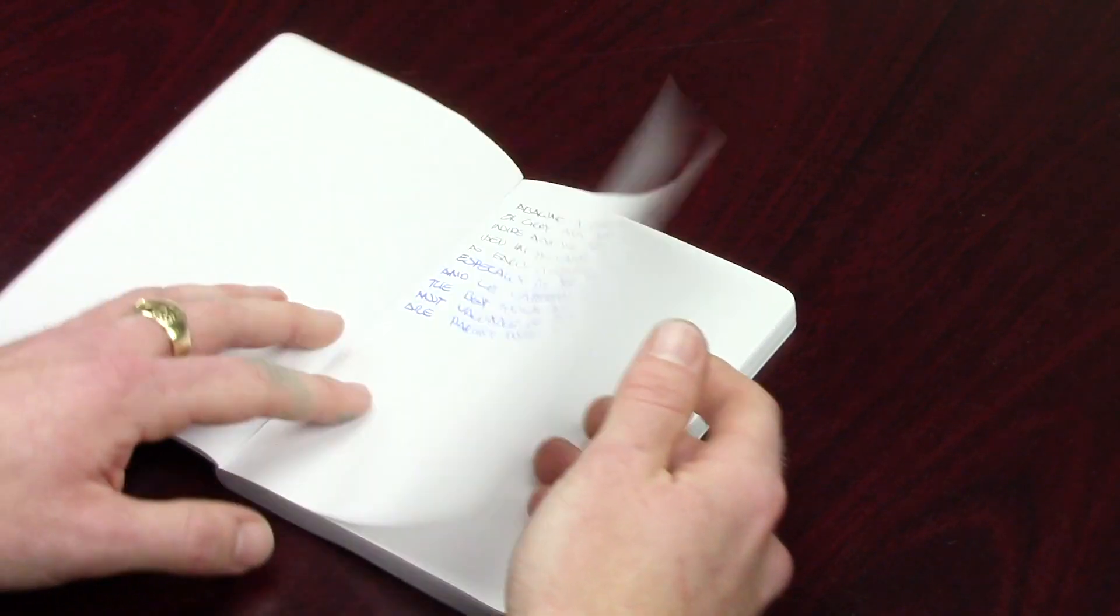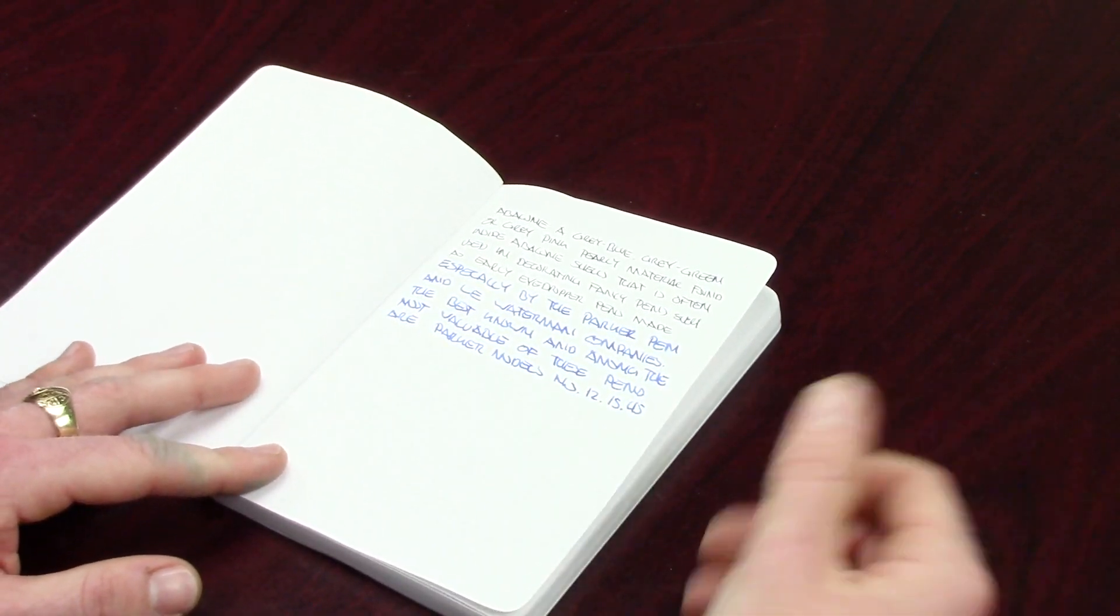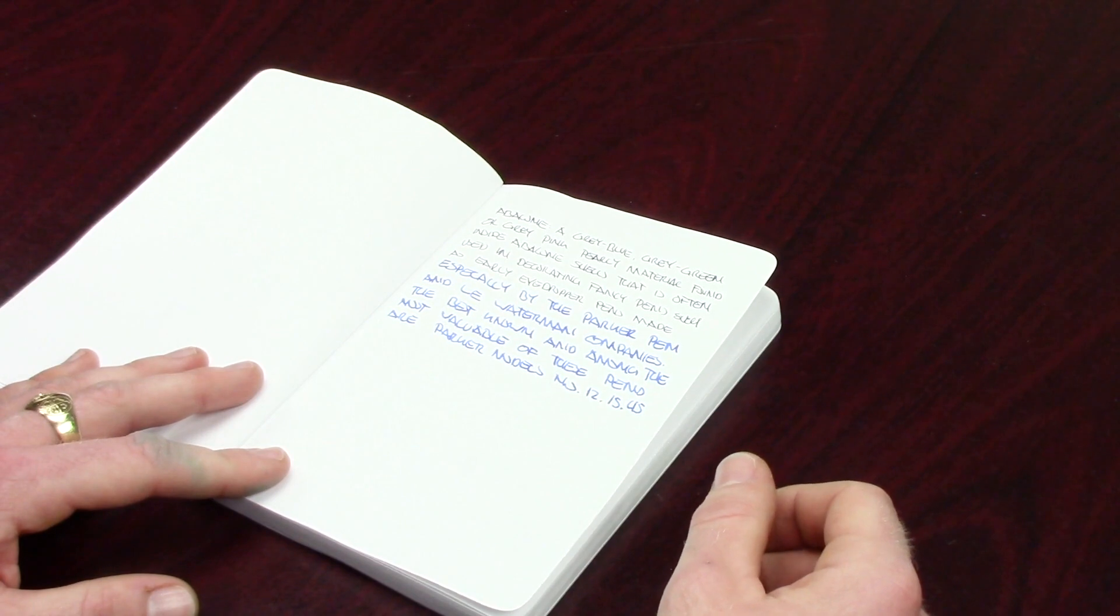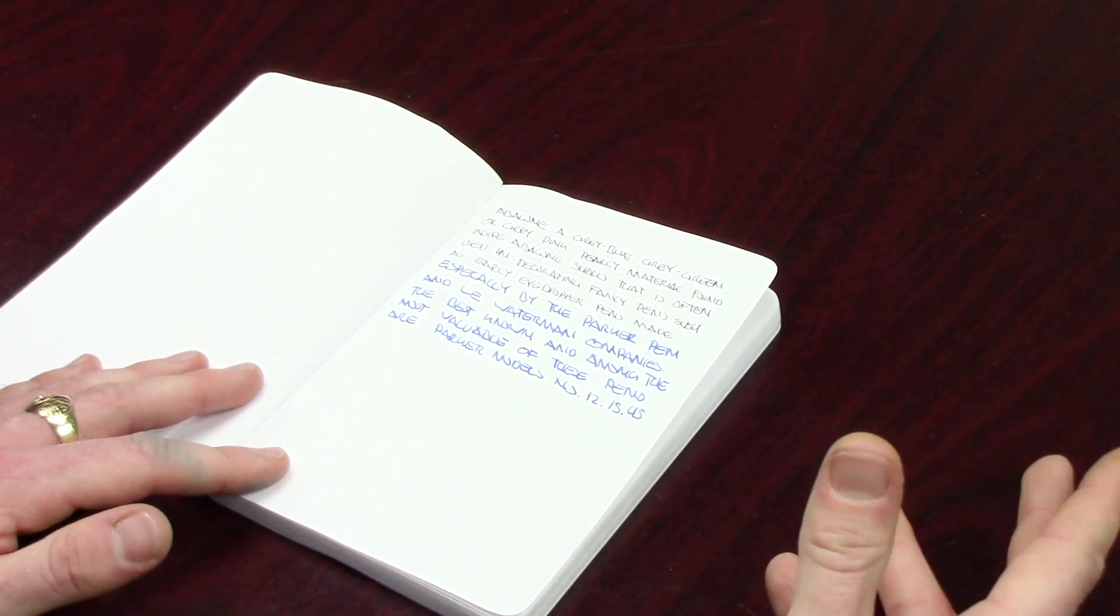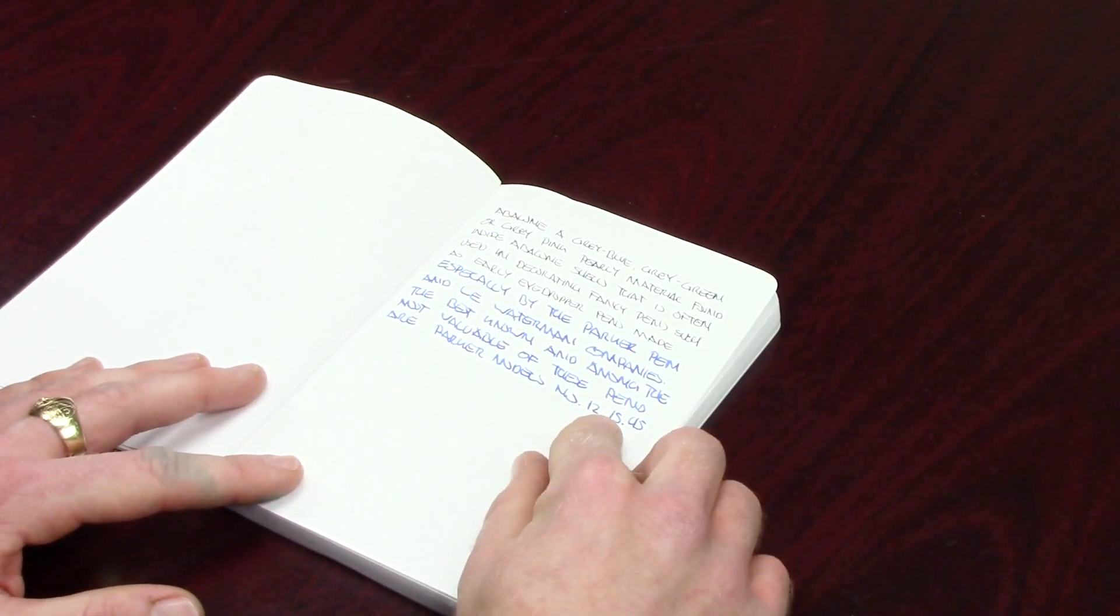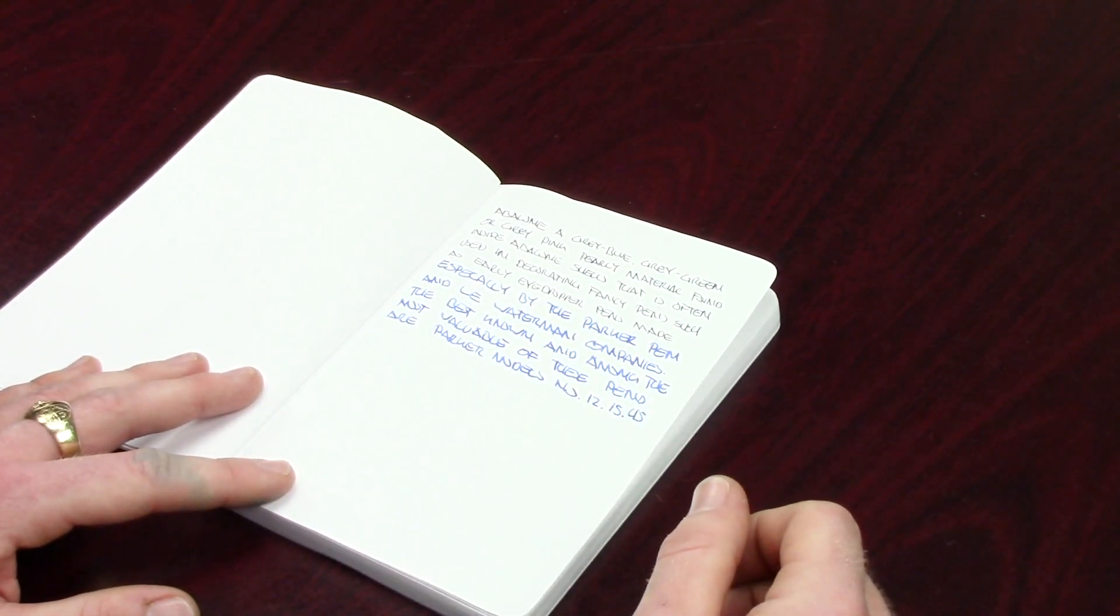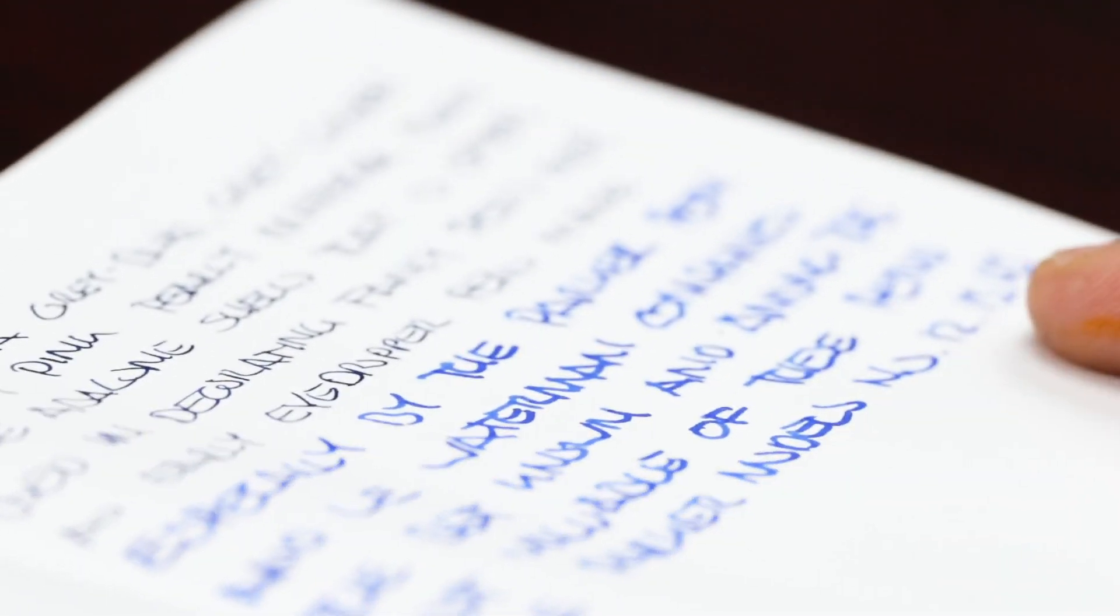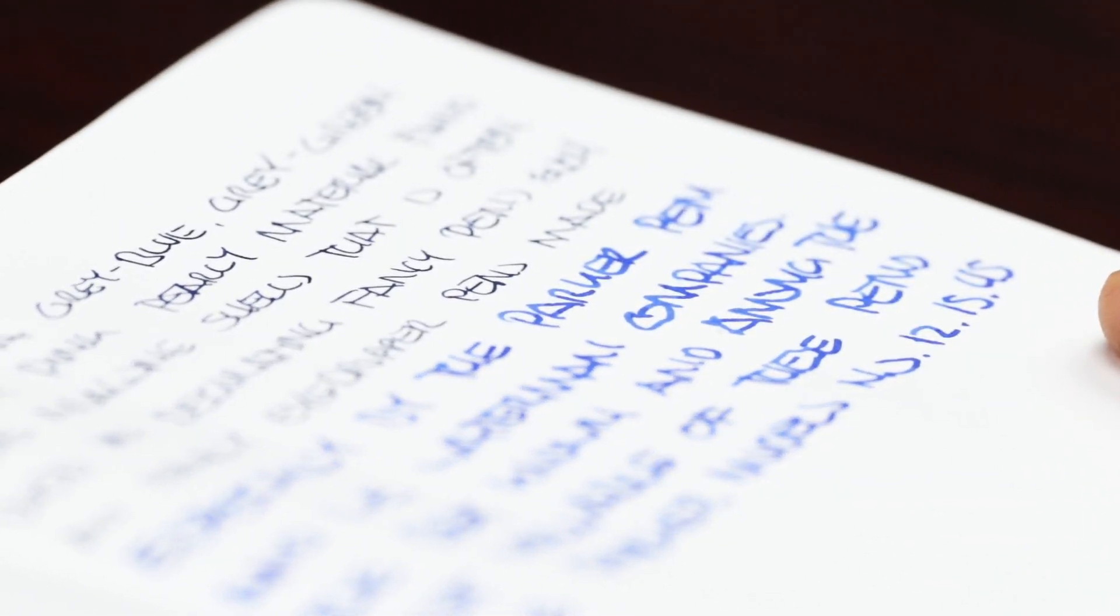I will note that this paper, unlike Rhodia, Clairefontaine, or Life, the ink seemed to absorb a little bit more. It didn't stay on the surface so that really cut back on any sheening you would see. This blue ink is actually Sailor Sultan which is known for its really pronounced blue sheen and on this paper it just absorbed right in and it didn't have any of that.